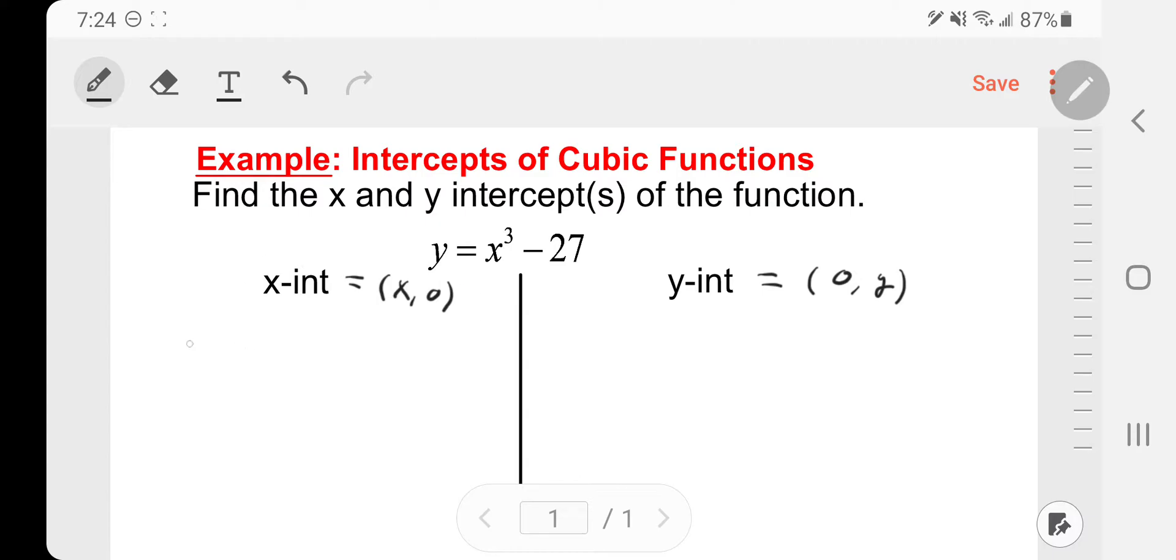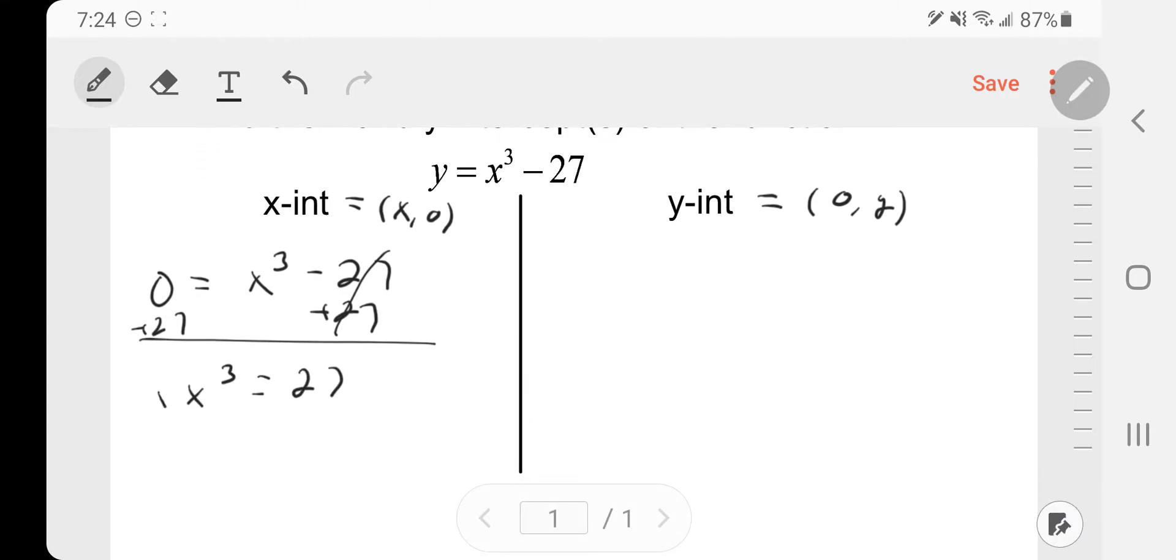If I'm looking for the x-intercept, I'm going to plug in a 0 for y and solve for x. I can add 27 on both sides and I get x to the third is equal to 27, and then I would take the cube root on both sides and I would get x equals 3.